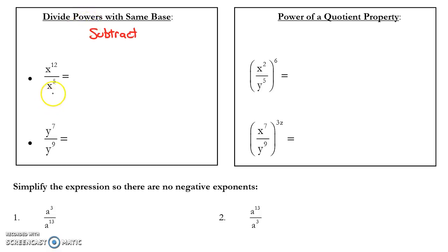What you have to be very aware of is knowing what the difference is between 5 and 12, and which one is bigger. Since 12 is bigger, my variable will go up in the numerator where 12 is. If you look at the second example here, the exponent of 9 is bigger than 7, so my variable y will go in the denominator.